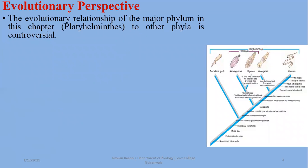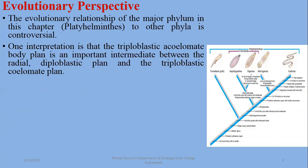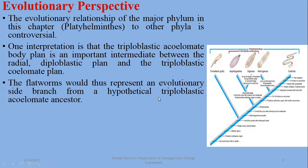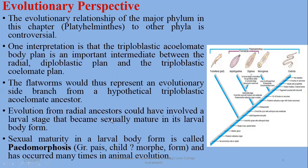From an evolutionary perspective, one interpretation is that the triploblastic acoelomate body plan is intermediate between the radial diploblastic plan and the triploblastic coelomate body plan. Platyhelminthes would thus represent an evolutionary side branch from a hypothetical triploblastic acoelomate ancestor. Evolution from radial ancestors could have involved a larval stage that becomes sexually mature in its larval body form — a process called pedomorphosis — which has occurred many times in the evolution of animals.